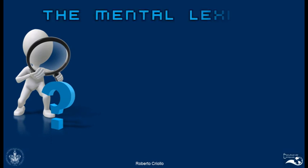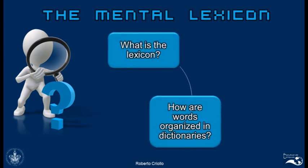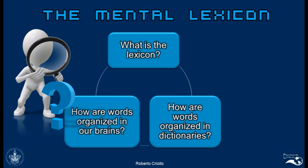In this case, the first question that we need to ask is related to the mental lexicon. So, what is the lexicon? How are words organized in dictionaries? And finally, how are words organized in our brains?